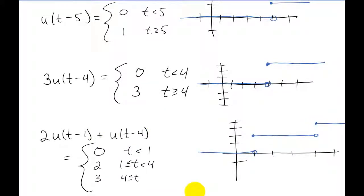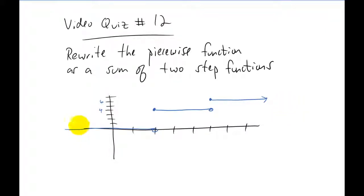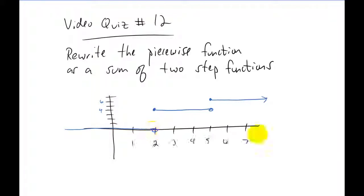Hit pause and consider what you would do if you wanted to take this piecewise function and rewrite it as a sum of step functions. That's what I want you to do for video quiz number twelve. I drew out a piecewise function: it has a value of four on one piece, six on the next, and zero below. Try to write this as a sum of two step functions. Good luck with that, and I'll see you in class.